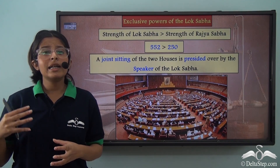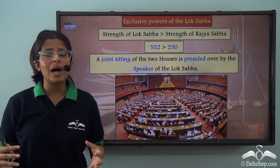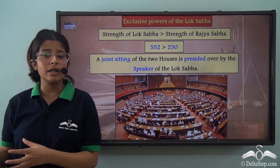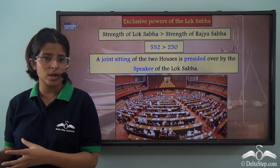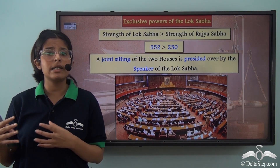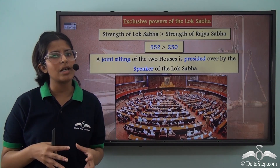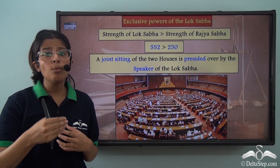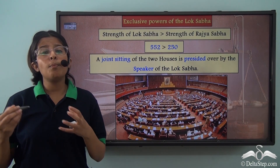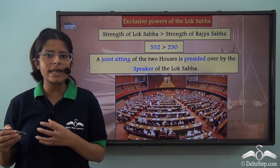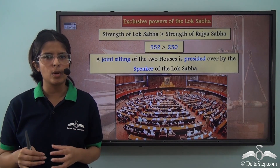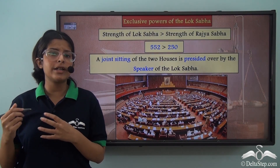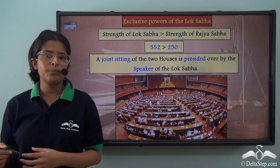Sometimes there may be a bill that cannot be agreed on by both houses together — maybe the Rajya Sabha doesn't agree to a bill passed by the Lok Sabha, or vice versa. If there is a deadlock, that is no more progress can be made, the President might call a joint sitting of the Rajya Sabha and the Lok Sabha. In this joint sitting, the Lok Sabha has a greater advantage than the Rajya Sabha.